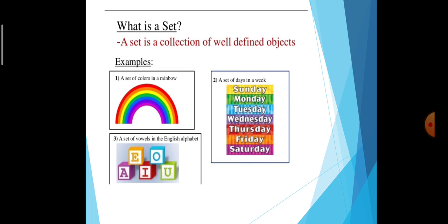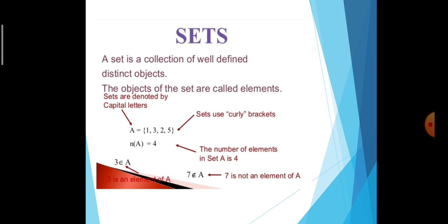So, what is a set? A set is a collection of well-defined objects. For example: a set of colors of the rainbow, a set of vowels in the English alphabet, a set of days in a week — these are all well-defined, so they are called sets. A set is a collection of well-defined distinct objects. The objects of the set are called elements. Sets are denoted by capital letters.